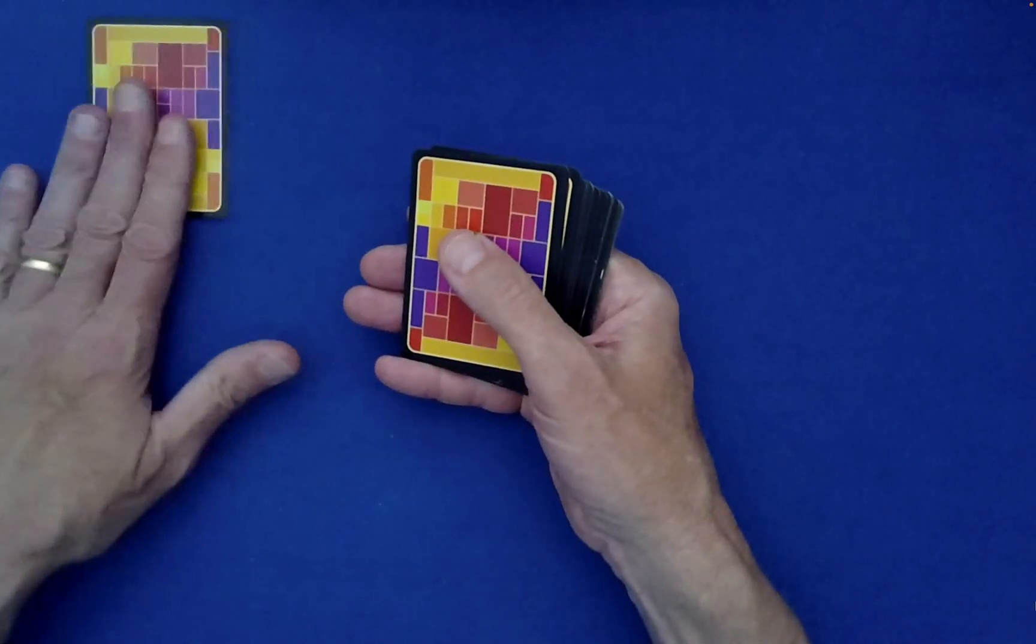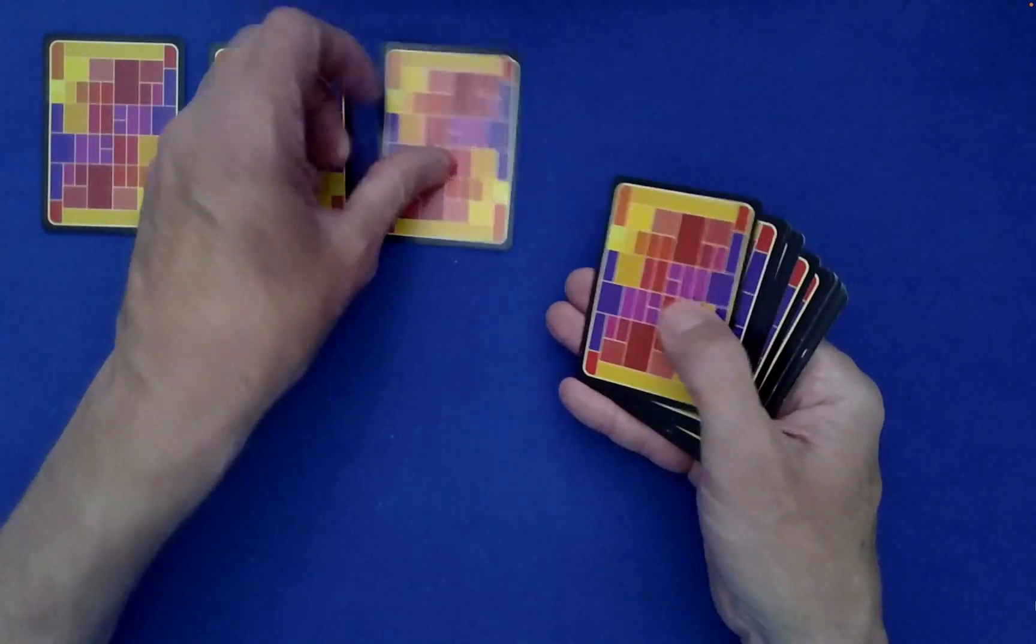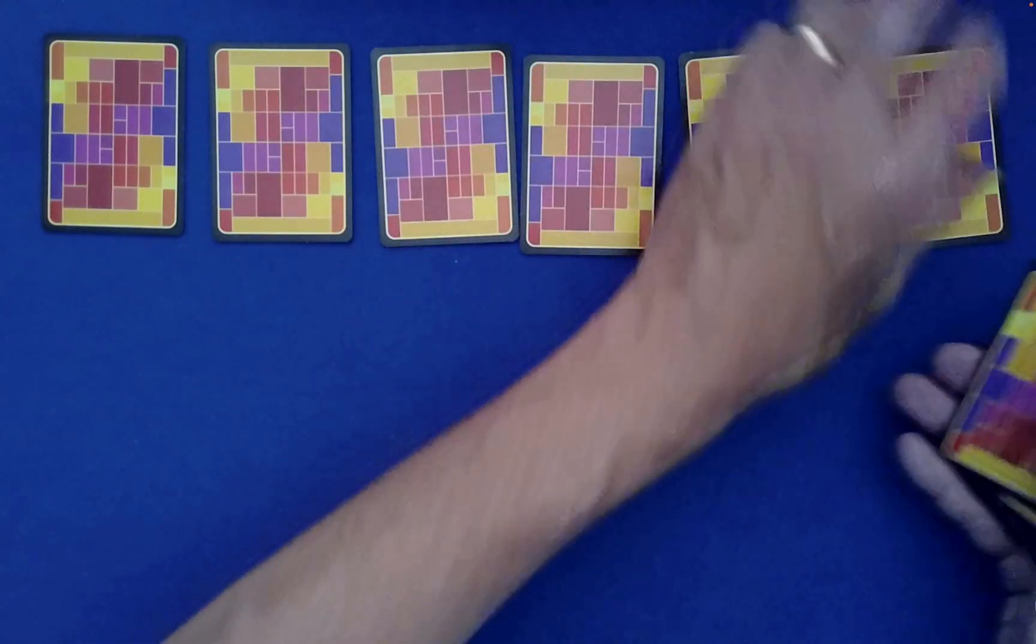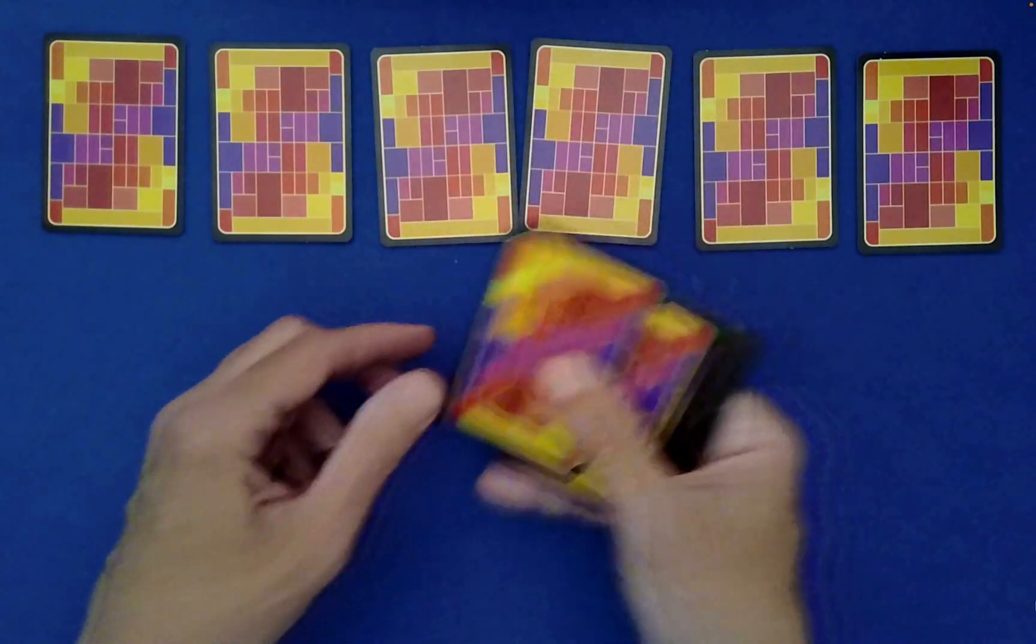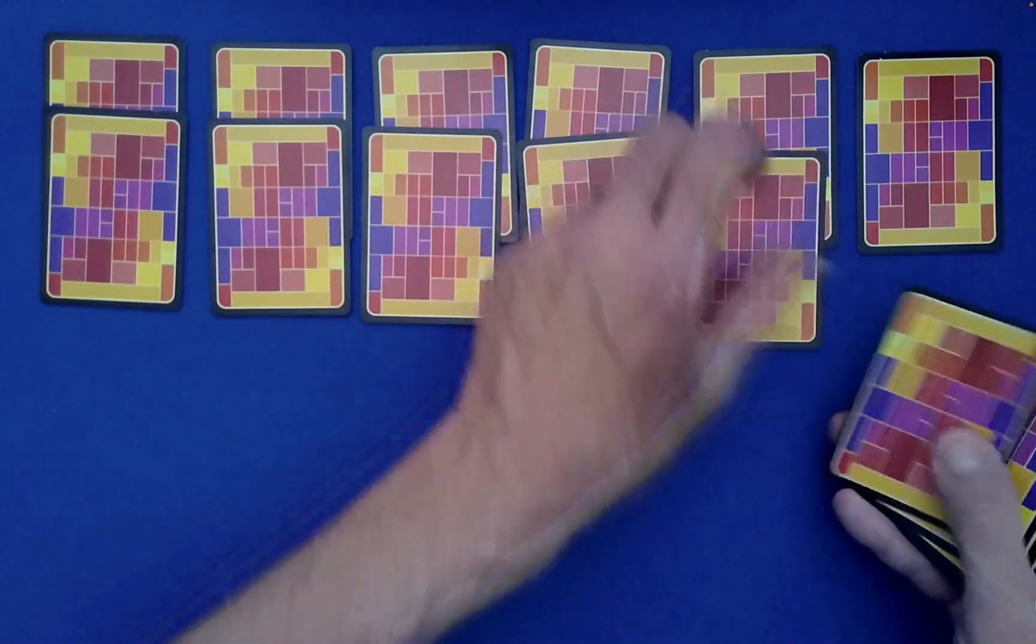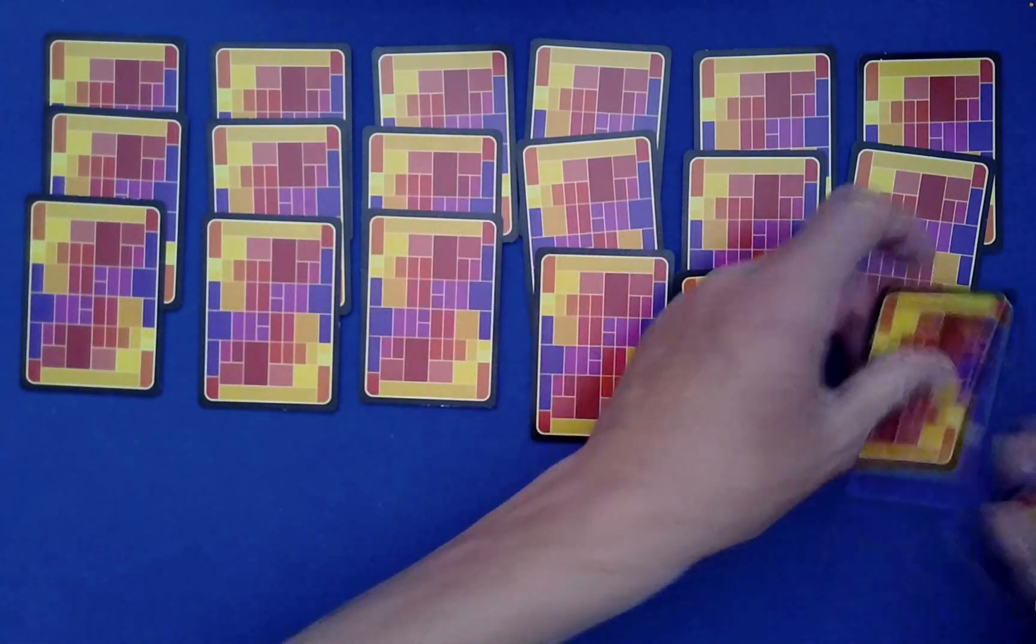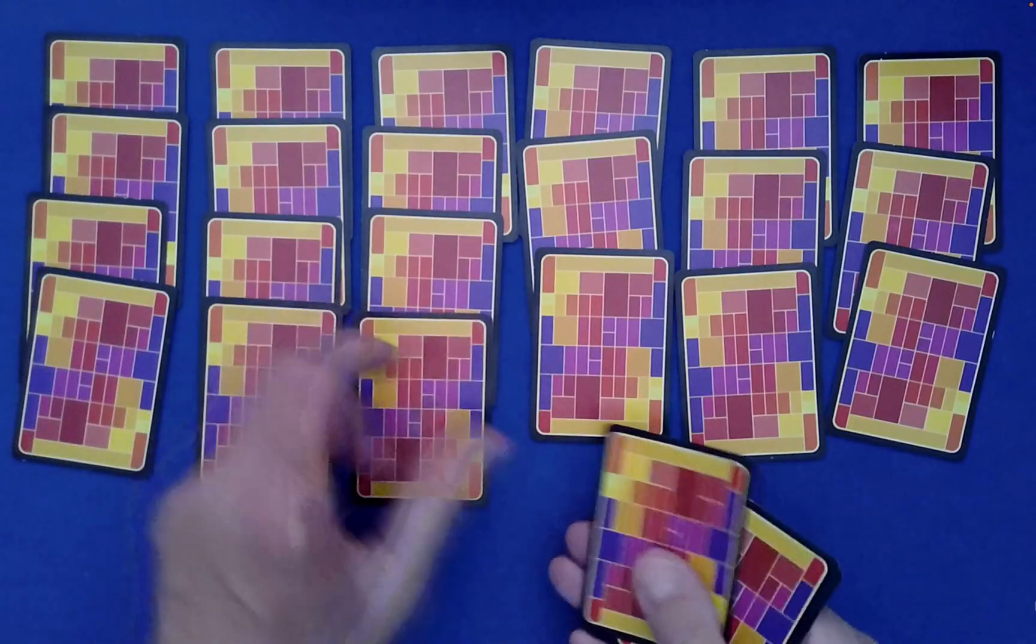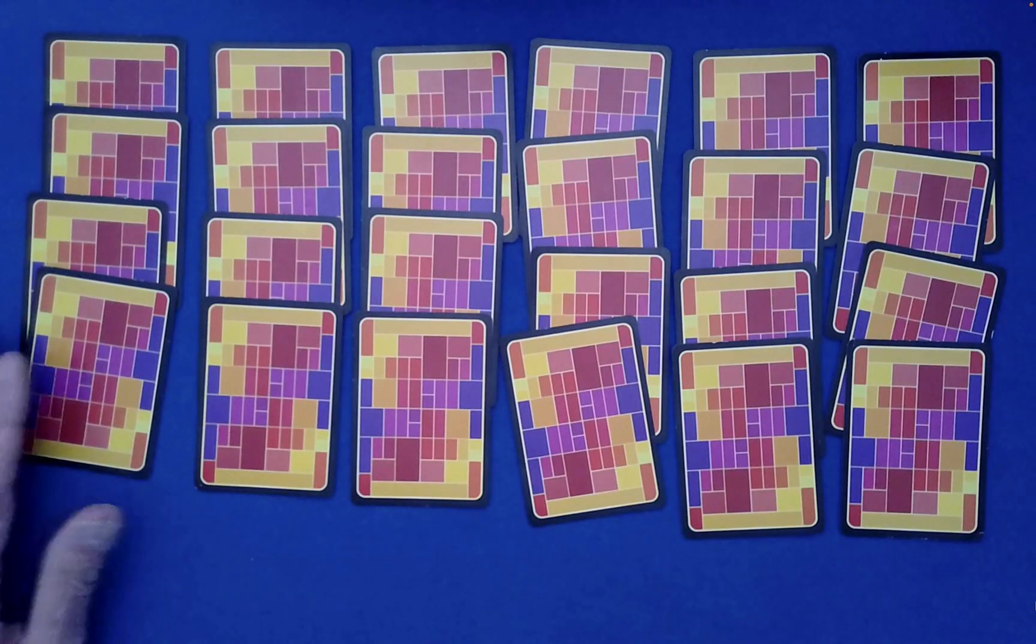And then finally, we're going to deal out into six piles. Whoa, six piles. If I can fit them. There we go. One, two, three, four, five, six. I'm looking at the camera, making sure they all fit. Okay, wow, look at that. So we have six columns of four cards.